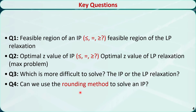Question 4: Can we use the rounding method to solve an integer programming problem? That means, after we get the optimal solution for the decision variables in the linear programming relaxation, can we round these variables to the nearest integer and claim that the rounded solution is the optimal solution to the integer programming problem?